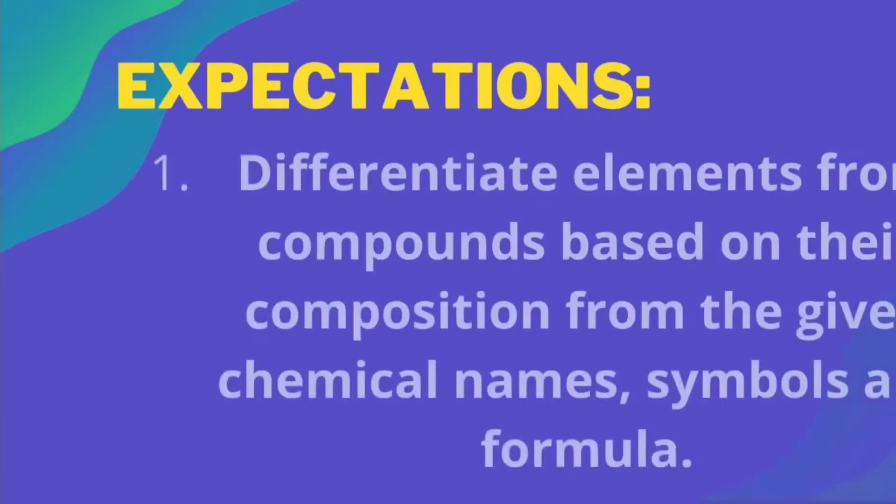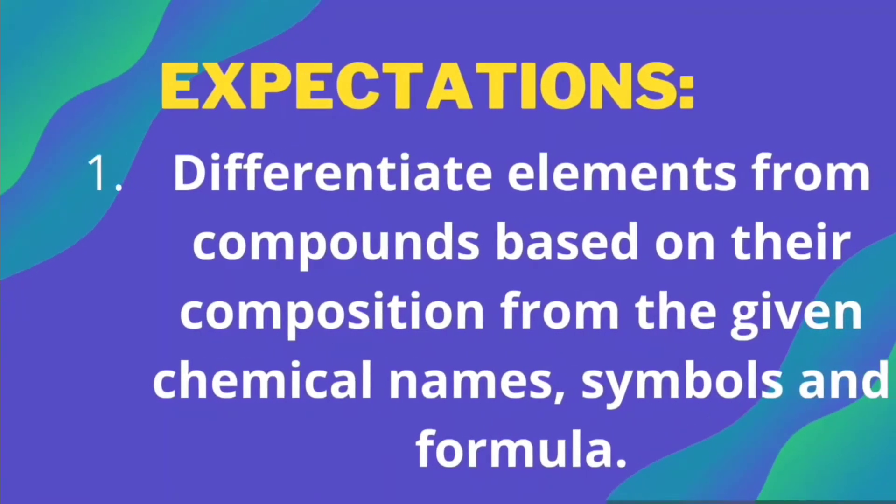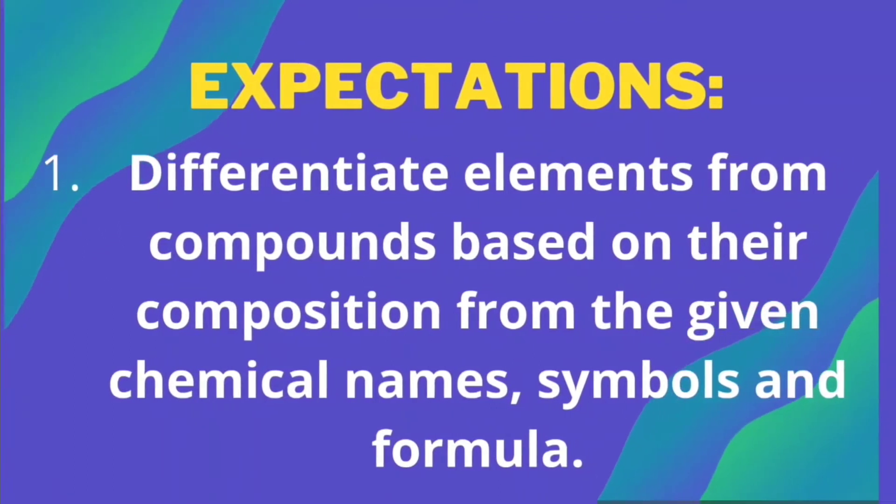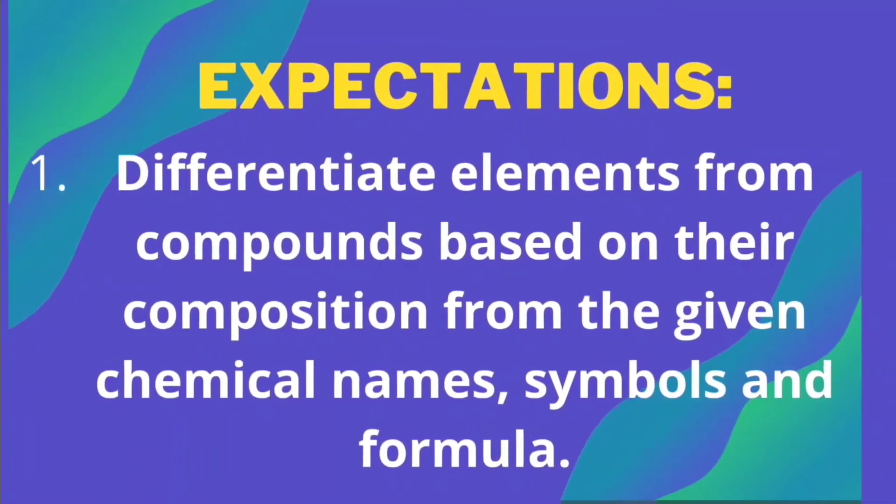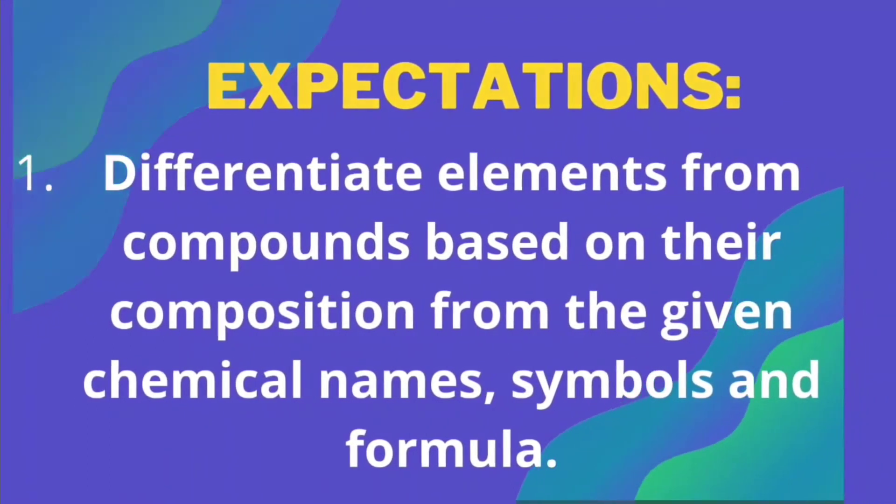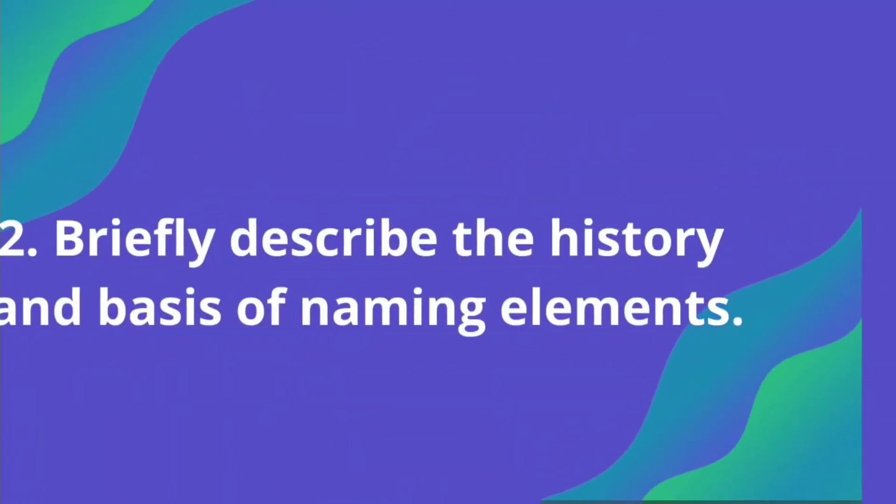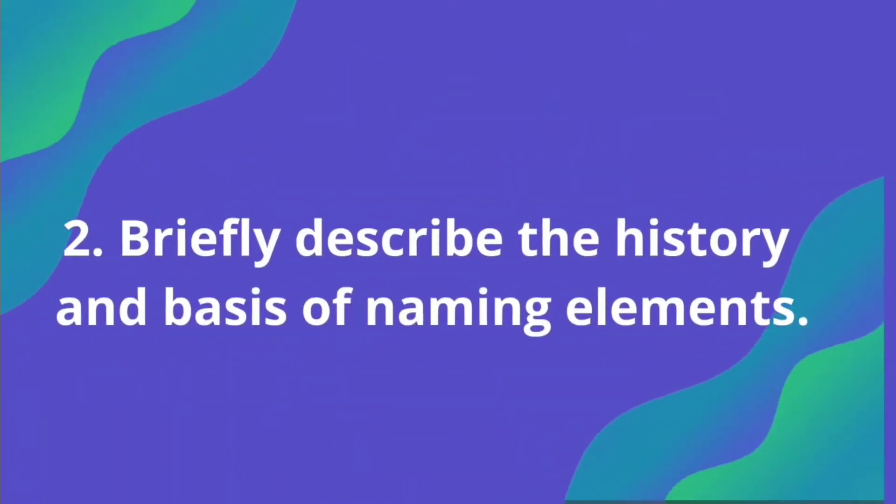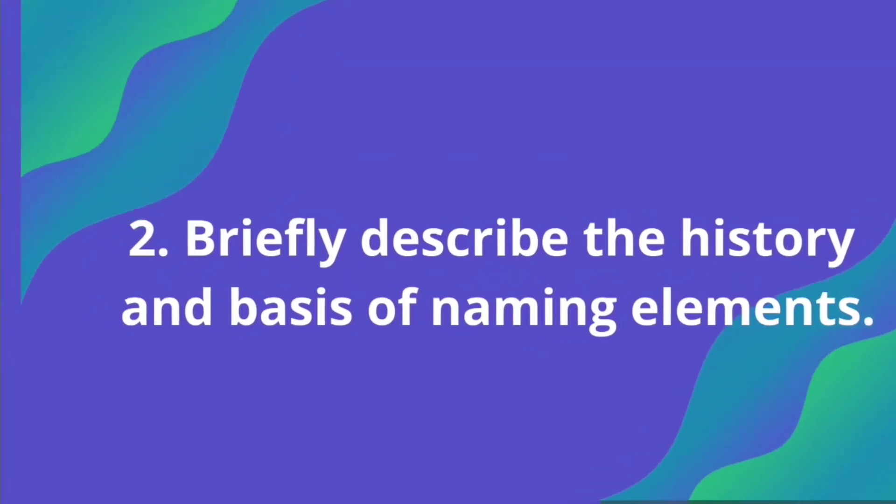In your module 3, we are expected to learn the following: 1. Differentiate elements from compounds based on their composition from the given chemical name, symbols, and formula. 2. Briefly describe the history and basis of naming elements.